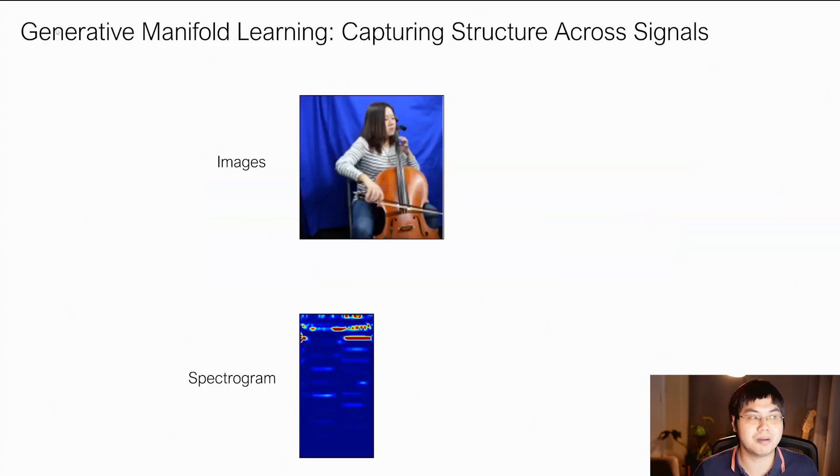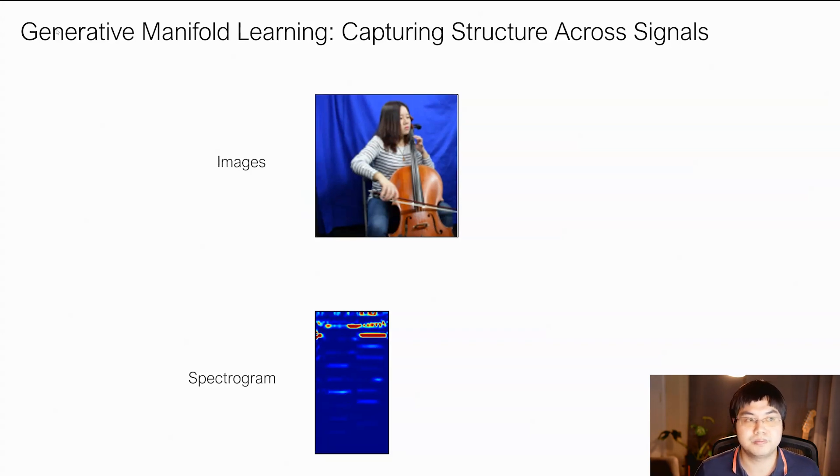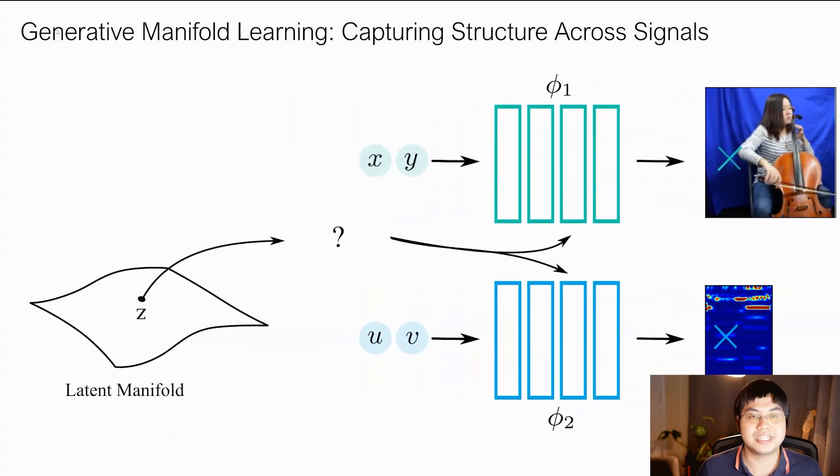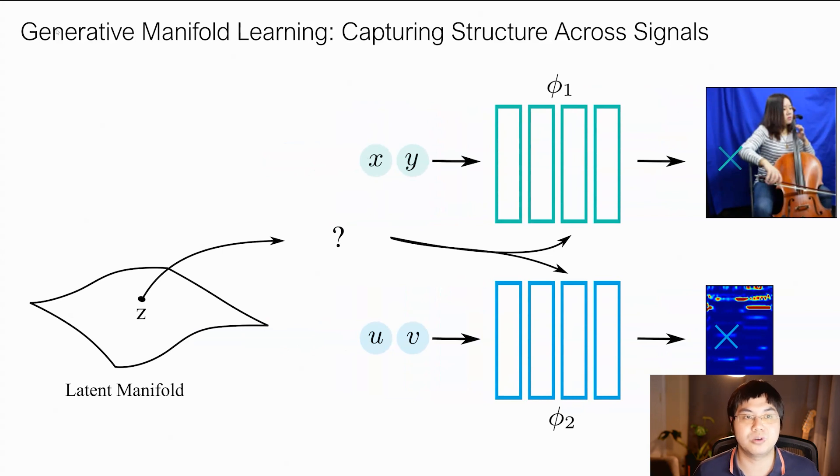Now consider this more complicated multimodal signal consisting of both images as well as audio. Again, we utilize the neural field to represent both of these. One that maps in pixel coordinates to the image and another one frequencies to the spectrogram. We are interested in discovering the underlying latent manifold in which these signals lie. In particular, we want to find a latent space which maps the latent to these neural fields. How do we obtain such a mapping?